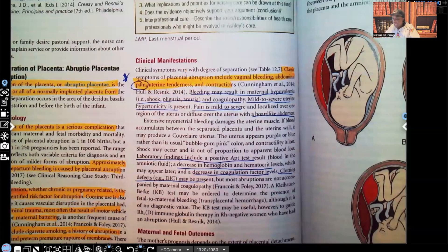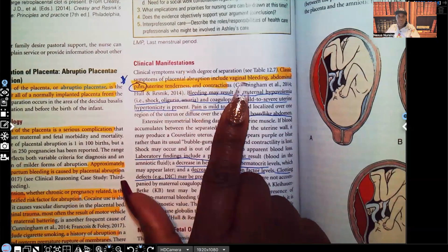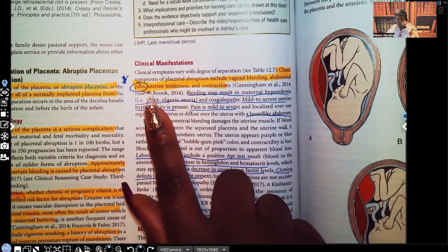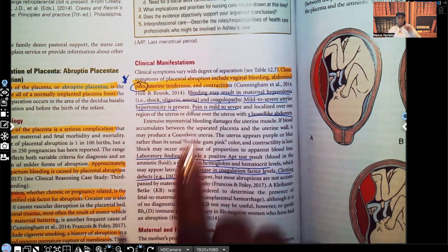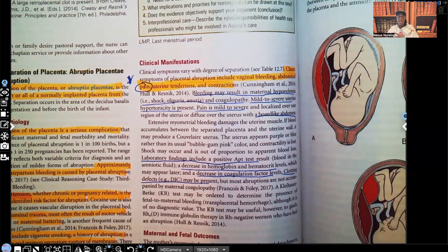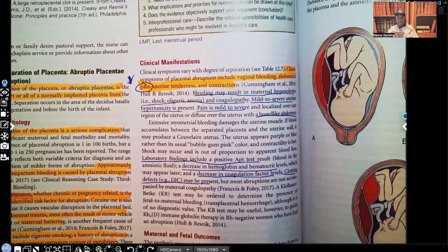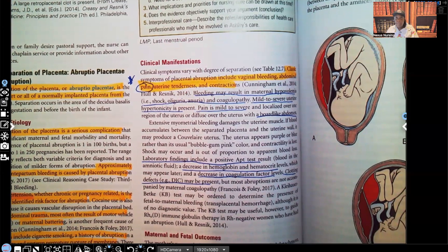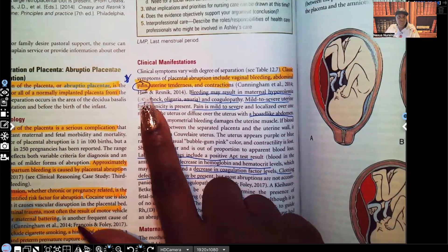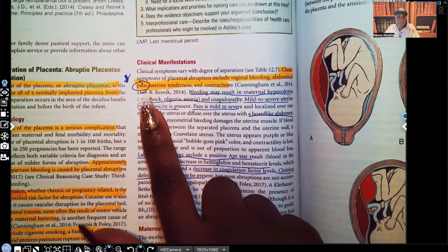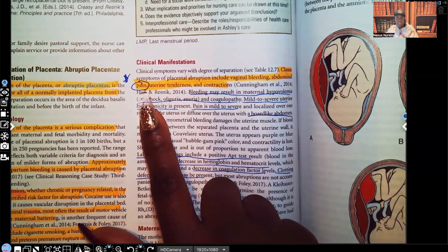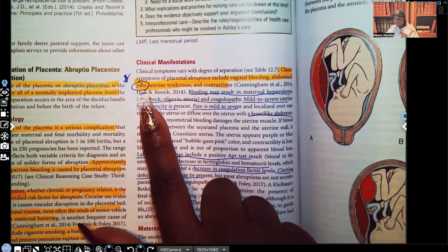Clinical manifestations. Classic symptoms of placental abruption include vaginal bleeding, abdominal pain, and I circle abdominal pain for a reason. Uterine tenderness and contractions. The reason I circle abdominal pain, lots of the signs and symptoms of separation of placenta, abrupted placenta, are similar to placenta previa. But guess what? When it comes to separation of placenta, patient's going to have pain. In placenta previa, it's painless bleeding. So that's a big difference that you need to be aware of to know the difference between those two.